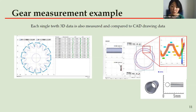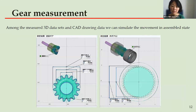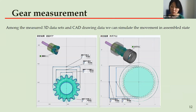The gear measurement requires composing a measurement program, which takes a few working days, but once we set the program for the gear, a non-specialist can achieve reliable and stable measurement. Among the measured 3D datasets and CAD drawing data, we can simulate the movement in an assembled state. The gear meshing is an important spec, but from the measurement data alone, it is difficult to evaluate whether the gear will satisfy the requirement. Thus, the movement test is held after the assembly process, meaning some gears might fail the assembly test, leading to losses in production. To minimize those losses, we are capable of simulating the movement test using multiple sets of scanned gear data or scanned data and CAD data.